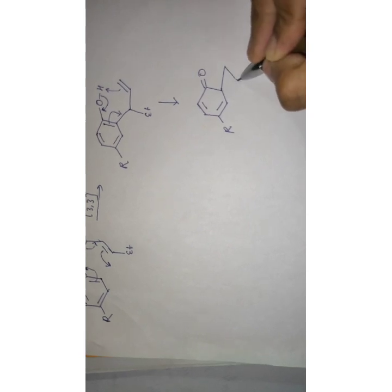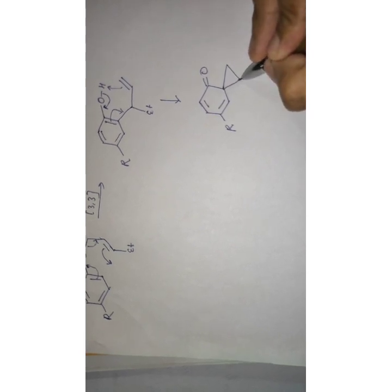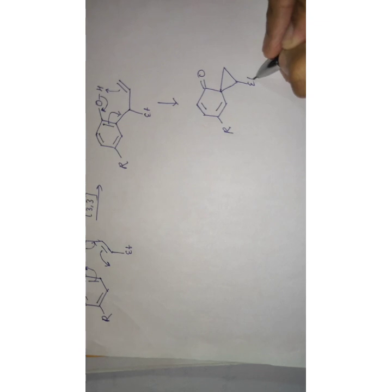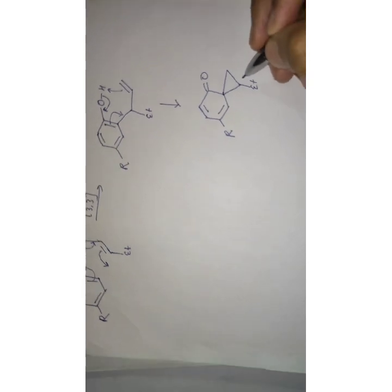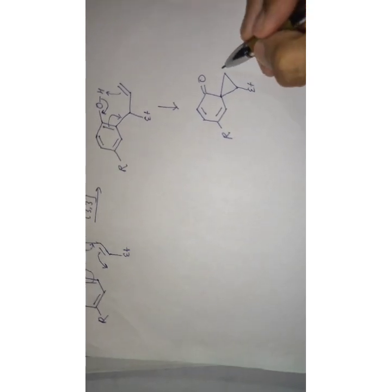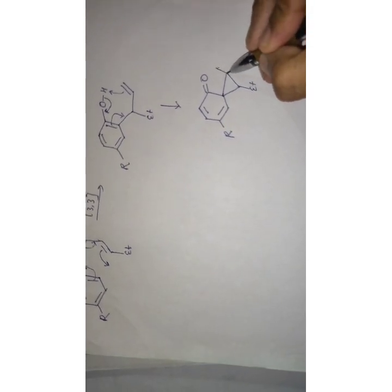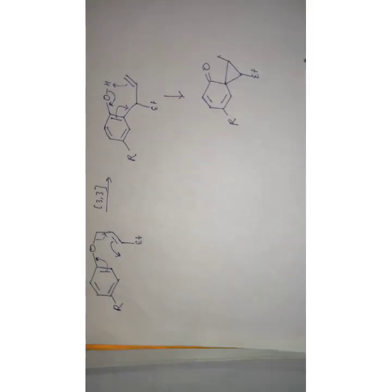This forms a cyclic ring — a bicyclic type intermediate with an ethyl group. This is the key intermediate in the mechanism.